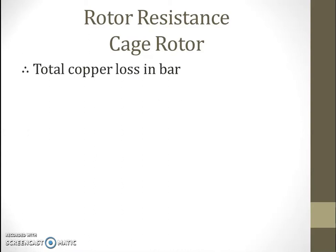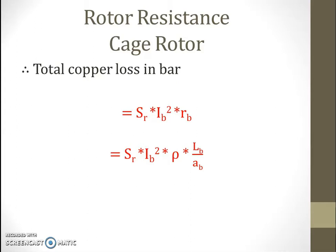So total copper loss in the bar: we have calculated the resistance of each individual bar, and now we calculate total copper loss that is I-squared-R losses. That is IB squared multiplied by RB — where IB is bar current and RB is bar resistance — multiplied by number of rotor slots. Total number of bars equals total number of rotor slots. Substituting the bar resistance, total copper loss equals SR multiplied by IB squared multiplied by rho multiplied by Lb divided by cross sectional area.